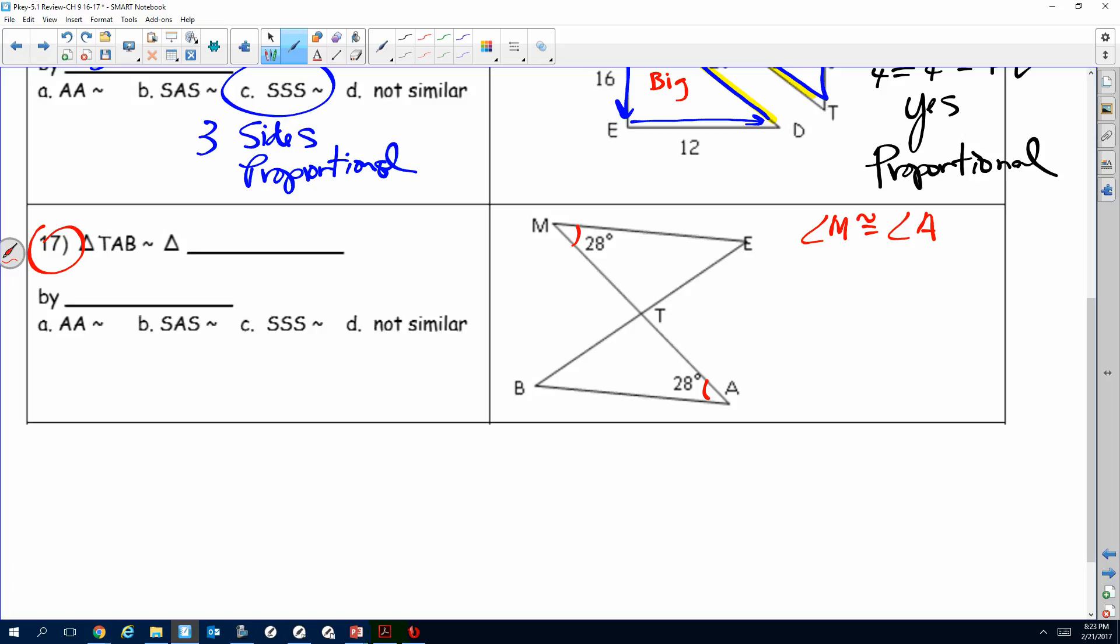Hopefully you see the other known angles we can mark right here are vertical. Mark vertical angles. Now do I have two angles? Yes, I do. So we know it's going to be by angle-angle similarity because we showed two congruent angles.